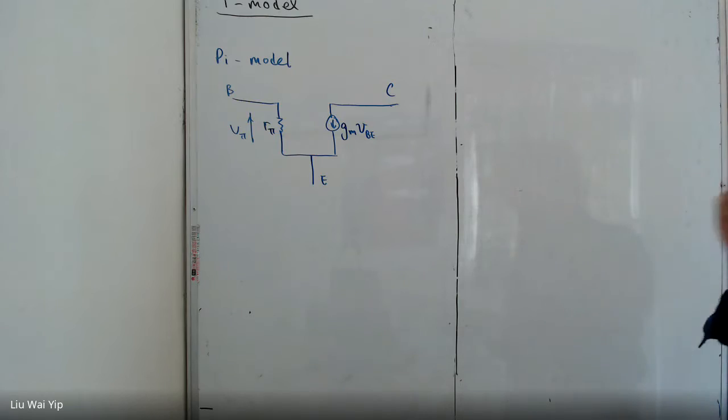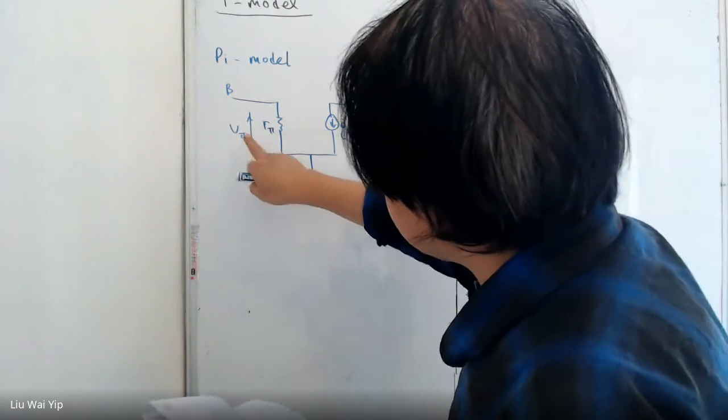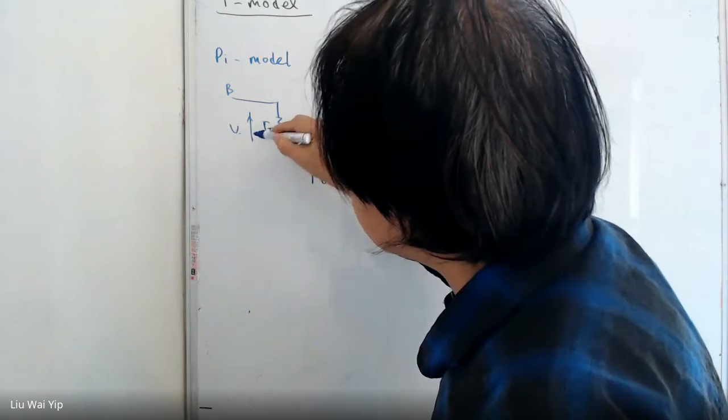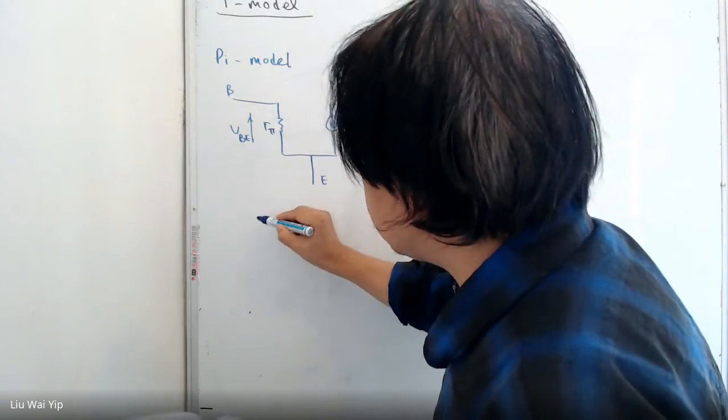Now, take a look here. V pi, which is VBE. So we can just say VBE. What is VBE?